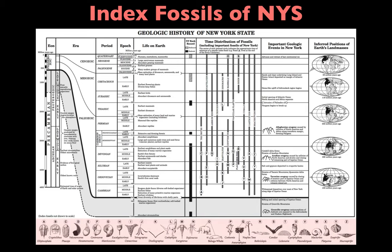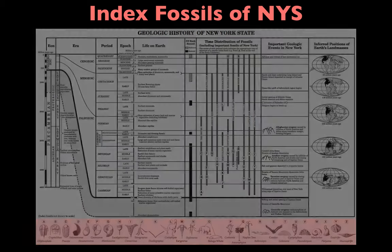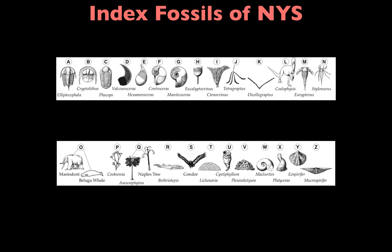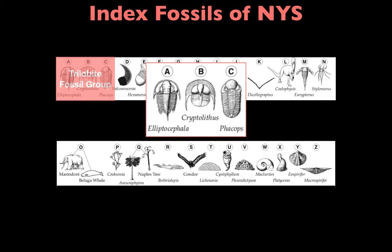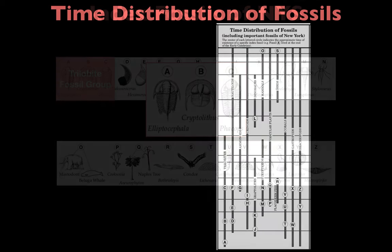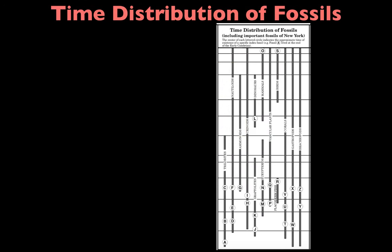At the bottom of pages eight and nine, you'll see a variety of index fossils, each represented by a different letter. Each index fossil also has a name and an image to go along with it. The fossils representing the trilobite group are fossils A, B, and C — specifically Ellyptocephala, Cryptolithus, and Phacops. Those three fossils are individual members of the overall trilobite fossil group.